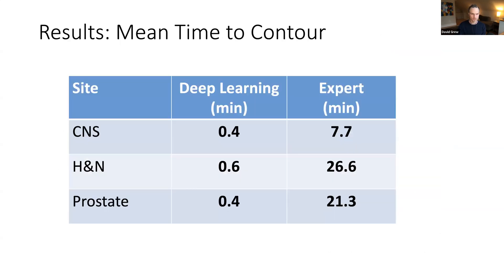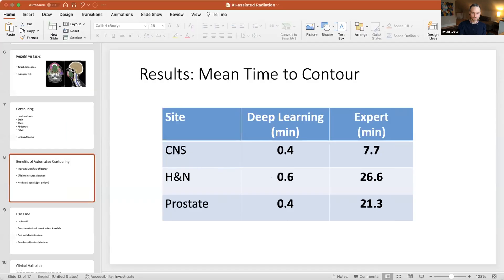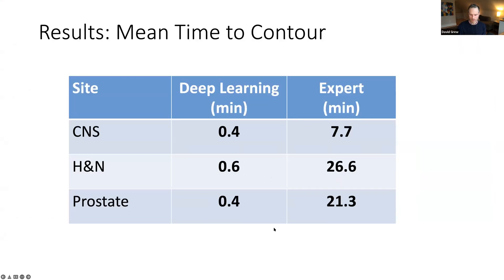The results were striking. Mean time to contour for CNS tumors was under a minute for the deep-learning system versus 7.7 minutes for experts. For head and neck cancers — where anatomy is even more complex — still under a minute for automated contouring versus almost 30 minutes for experts. For prostate, again under a minute versus 21 minutes. Clearly a much faster solution — at least tenfold.